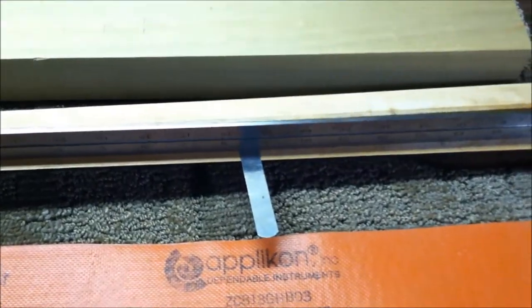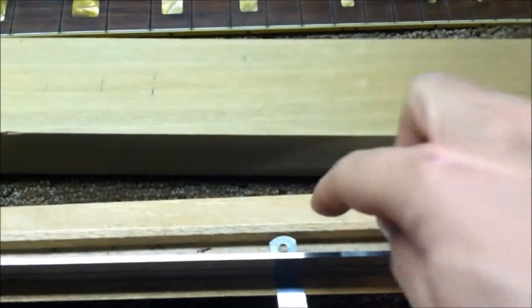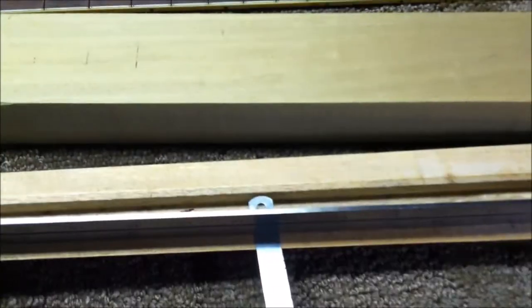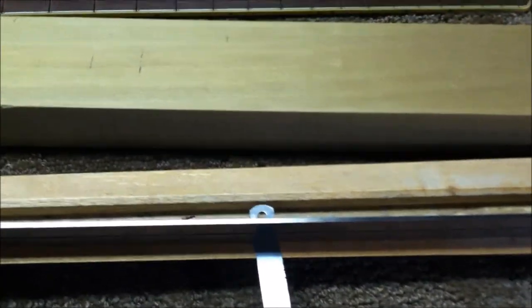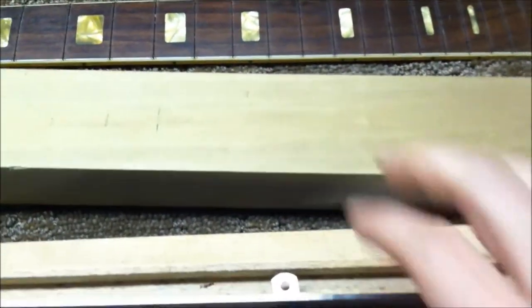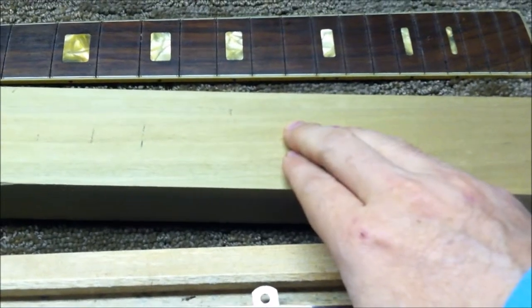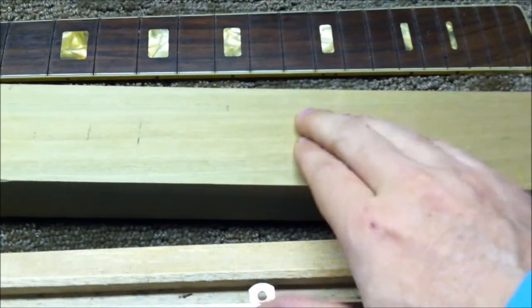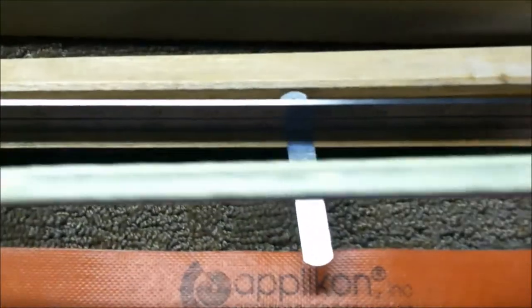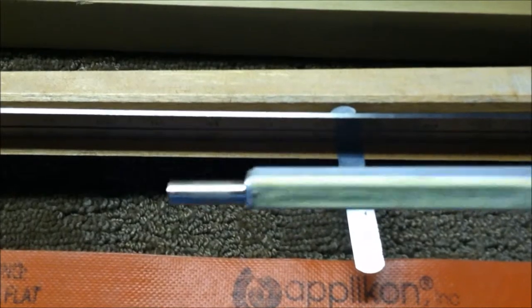It's the same on the other side and even diagonally it was still 10 thousandths. Using the heat blanket, removing the fingerboard, and clamping for about a week really did the trick. Now I can install my new truss rod.